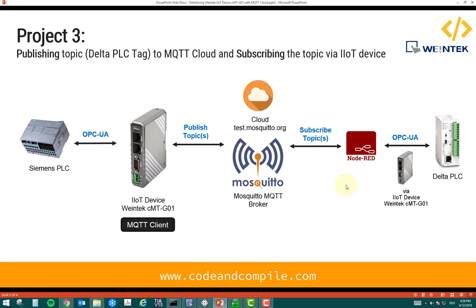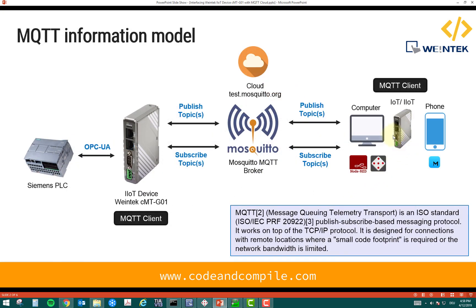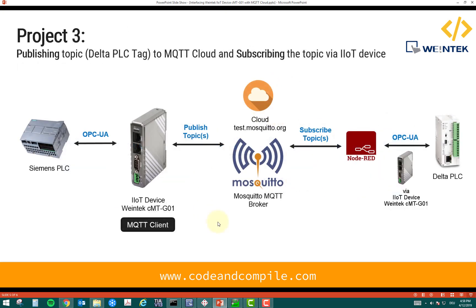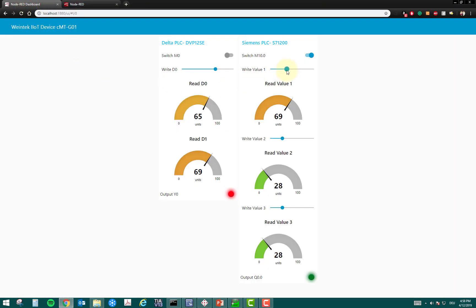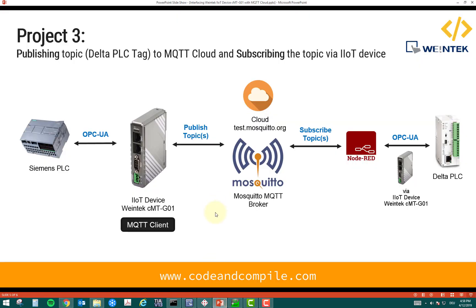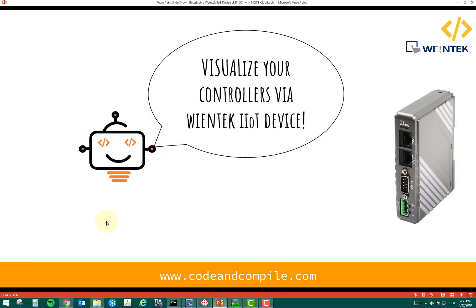So the information travels from Siemens PLC to IoT device to the cloud, and via Node-RED to the Delta PLC. Here I'm using a computer with Node-RED, but you could also use another IoT device if you don't want to use a computer. Delta PLC is following the Siemens PLC — there's a slightly sluggish response sometimes when traffic is not great, but you can see it follows in a few seconds. I hope you understand why IoT is very important these days for many applications, and how it interlinks devices. Visualize your controller via WineTech IoT device and explore the possibilities.